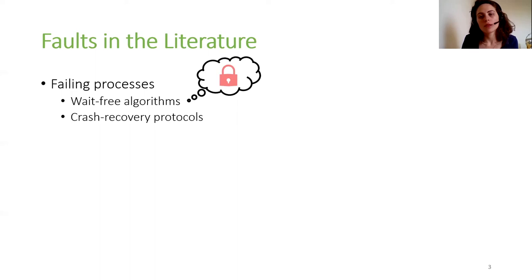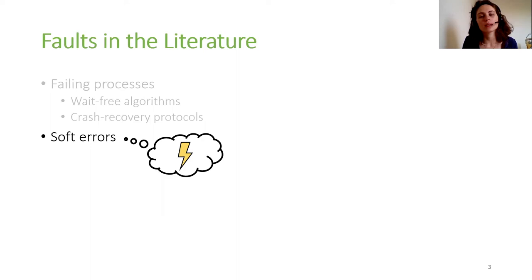Many existing studies focus on failing processes. For example, in a shared memory setting, a crash of a process holding a lock can prevent all other threads from making progress. Two well-known ways to deal with such failures are designing wait-free algorithms and adding crash recovery protocols.